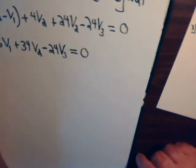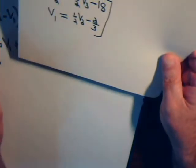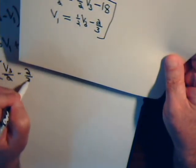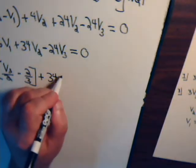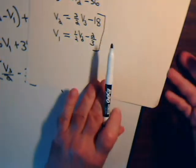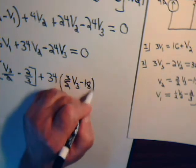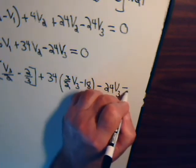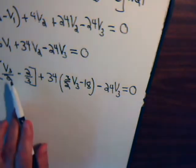And let's see if we can get this taken care of then. So we have minus 6 times V1. This is V1 right here. V3 over 2 minus 2 thirds. Plus 34 times V2. Here's our expression for V2. 3 halves V3 minus 18. And here, minus 24 times V3 equals 0. Now we have one equation, and it involves one unknown, V3.